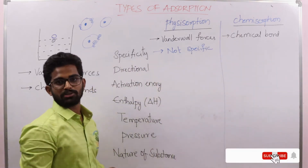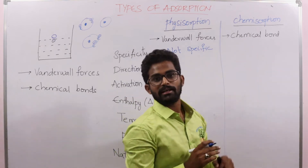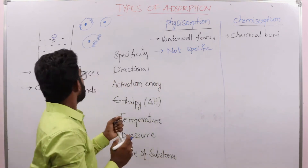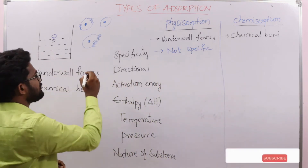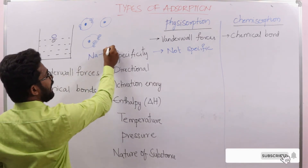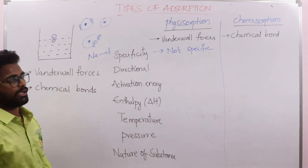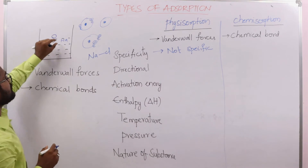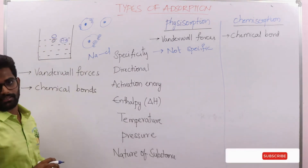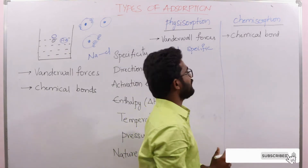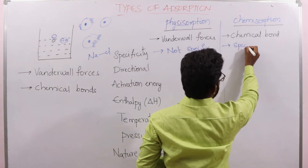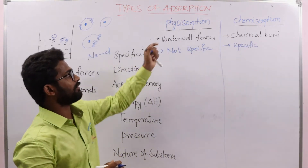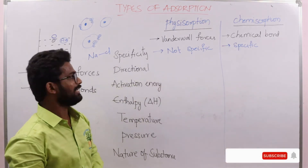Whereas in chemisorption, chemical bond formation takes place — ionic or covalent — based on the presence of specific atoms. For example, bond formation between Na and Cl occurs only where sodium atoms exist on the surface. Therefore, chemisorption is specific in nature, while physisorption is non-specific.